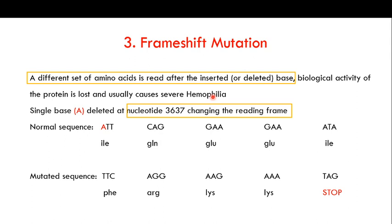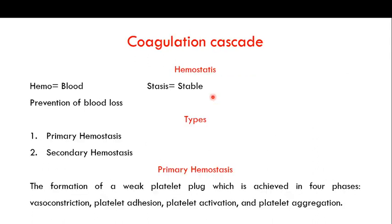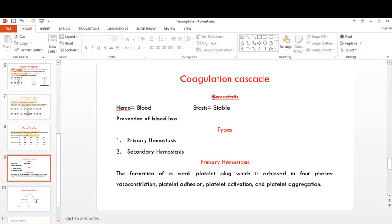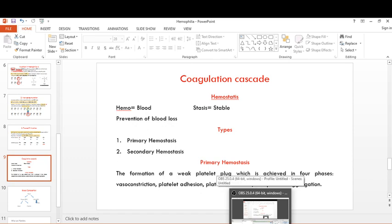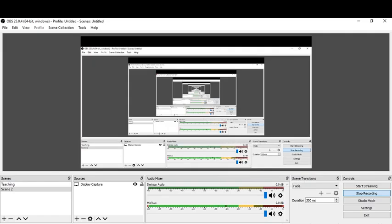So these are the three kinds of mutations — missense, nonsense, and frameshift — that you can expect in hemophilia A in the F8 gene, causing that individual to have hemophilia A. In the next video I'll focus on the coagulation cascade, because to understand hemophilia as a bleeding disorder you need to understand the normal blood clotting mechanism. If you like the video please share it with your friends, subscribe to my channel, and hit the notification bell. See you in the next video.